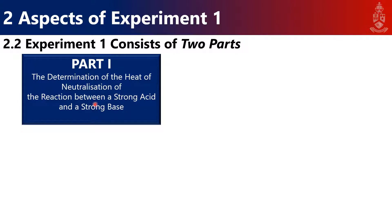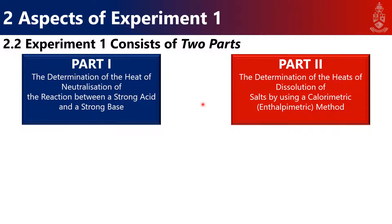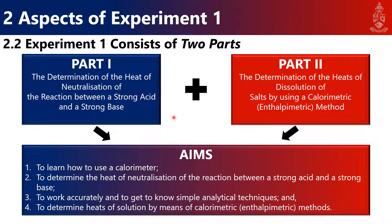Your experiment has two parts. The first is determining the heat of neutralization between a strong acid and strong base — sodium hydroxide with three different acids: HCl, acetic acid, and sulfuric acid. The second part involves dissolving salts in water: barium chloride, copper sulfate, and ammonium nitrate, to observe temperature differences. These aims cover studying calorimetry, determining the heat of neutralization, working accurately, and determining heat of solution by calorimetric method.